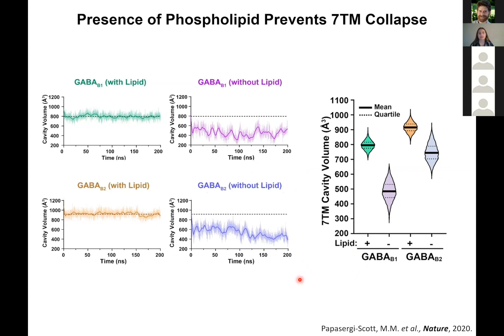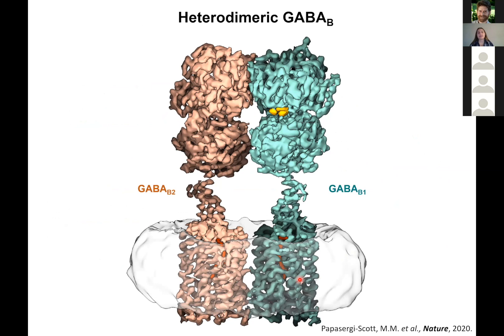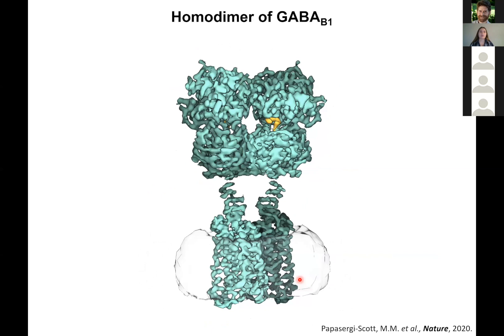I mentioned before that I'm using a tandem affinity purification method to get the heterodimeric structure, but if you don't use a tandem affinity purification method, you actually get a proportion of your receptors that are homodimeric. We were also able to determine a structure of a GABA-B1 homodimer. These homodimers are not capable of signaling through G-protein because GABA-B2 is required for G-protein activation. However, there are some cell types that actually express GABA-B1 without GABA-B2, and it's still unclear what this receptor is doing without having its G-protein binding partner.